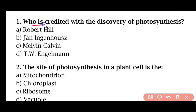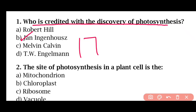Question 1: Who is credited with the discovery of photosynthesis? Options: Robert Hill, John Ingenhaus, Melvin Calvin, T.W. Engelmann. The correct answer is option B. John Ingenhaus discovered the process of photosynthesis in 1779.